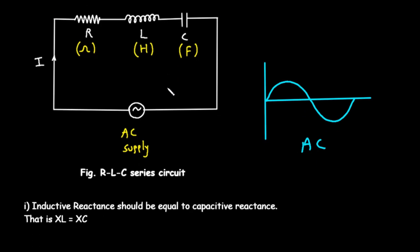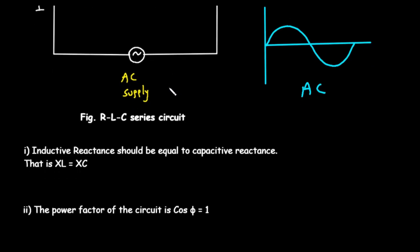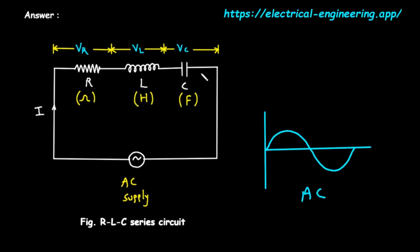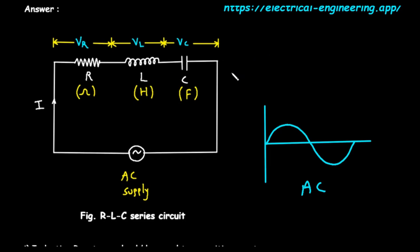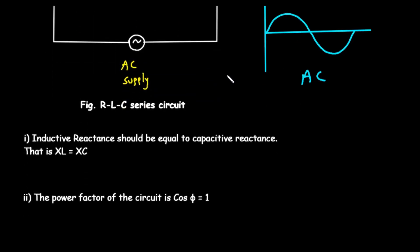Now, what is resonance? In simple terms, resonance in this circuit is a special condition that occurs at a very specific frequency of the AC supply. At this resonant frequency, the circuit behaves in a unique and very useful way. Let's explore the five key conditions that define this state of resonance.